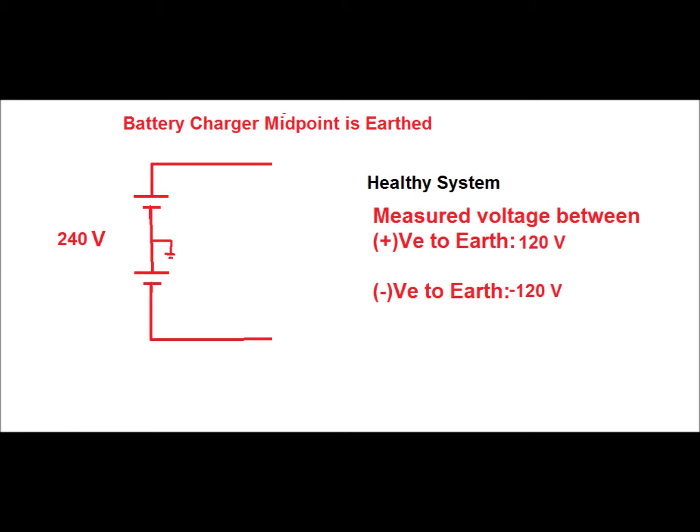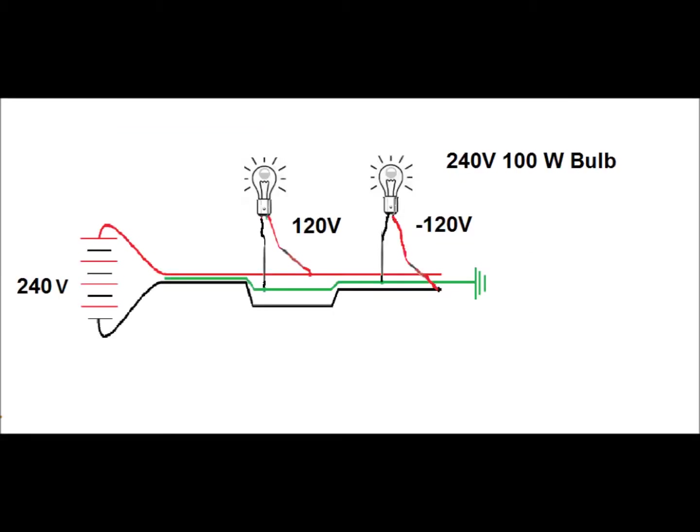That is why, for a healthy system, the measured voltage between positive to earth is +120 volt and negative to earth is minus 120 volt. That gives a total positive to negative voltage of 240 volt. To find out if there is an earth fault between any terminal and earth, the best method is to use a bulb.